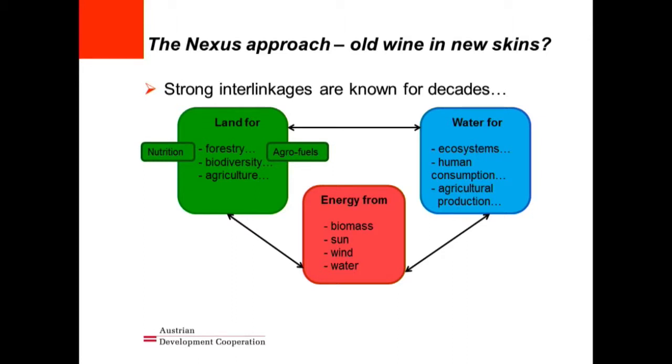When we look at the Nexus approach, we have been focusing on it for about two years. There is strong political commitment. It's not something very new — the strong interlinkages between water, land, and energy have been known for decades. But we've also learned they are linked to largely sectoral planning, sectoral budgeting, and sectoral prioritization. Even with the analysis and technical knowledge to deal with these interlinkages, implementing it in practice remains a challenge because of the huge complexity of looking at the whole system.